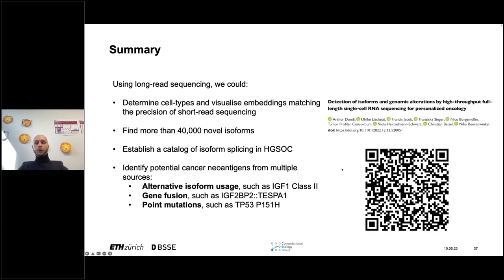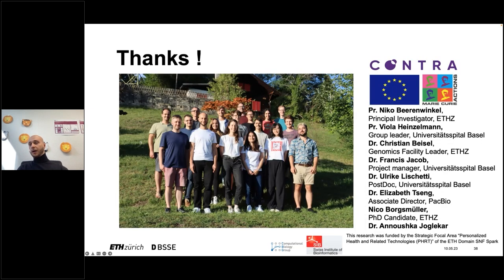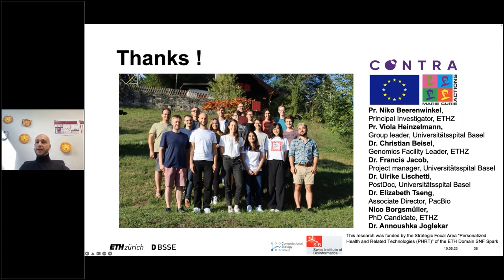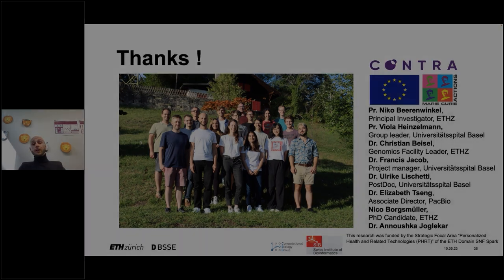Using long-read sequencing, we could determine cell types and visualize embeddings matching short-read sequencing. We found more than 40,000 novel isoforms validated by the GenCode team, and established a catalogue of isoform splicing in cancer cells. We identified potential cancer neoantigens from three types of sources: alternative isoform usage such as IGF-1 class 2 in cancer, gene fusions such as IGF2-BP2-TESPA1, and point mutations such as TP53 P151H. You can find these results in our preprint. Thanks to my colleagues, PI Niko Beerenwinkel, Christian Basel who designed this project, Ulrike Lichetti who did the experiments, and Nico Borgsmüller for his help with the pipeline and manuscript writing.